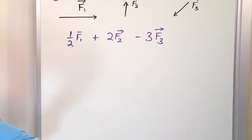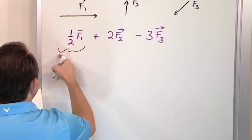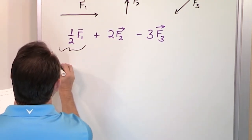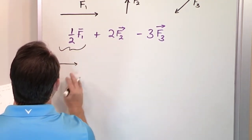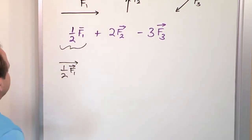So what I'm going to do is, if this is F1, then one half of F1, I'll just kind of do the curly cue to show you that one half of F1 is going to be a vector oriented to the right, but only about half of that length. So this is one half of F1.